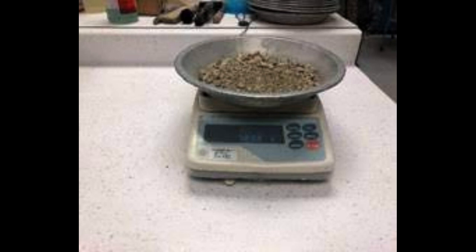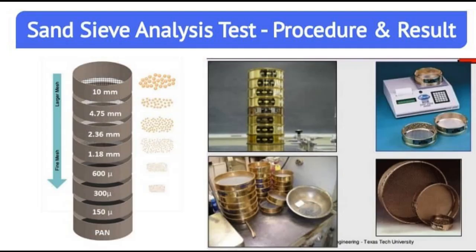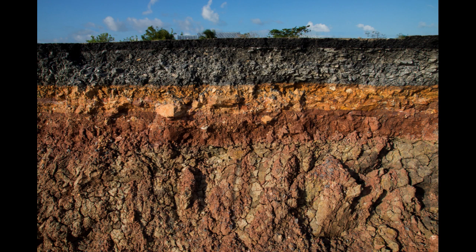Water Moisture Content of Soil. The purpose of this test method covers the laboratory determination of the water moisture content by mass of soil, rock, and similar materials where the reduction in mass by drying is due to loss of water. For simplicity, the word material shall refer to soil, rock, or aggregate whichever is most applicable.